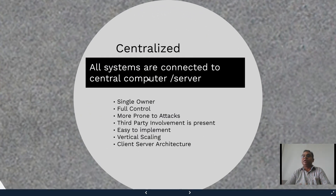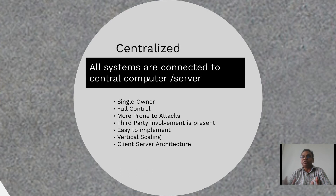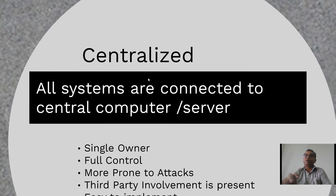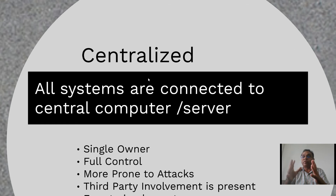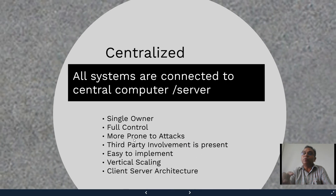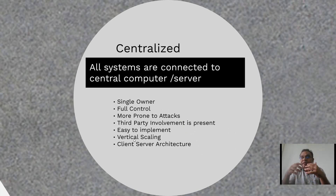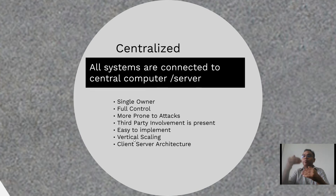Let's see in detail about centralized computing. All systems are connected to a central computer or server. In terms of organization, it is a single owner who has full control of the entire architecture. If that single owner wishes, they can do anything. There is a single server responsible for the entire task; if anything goes wrong, all the tasks are wasted. It is more prone to attacks. In centralized computing, third-party involvement is present because nodes are not communicating directly with each other, so a third party is needed.